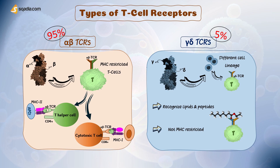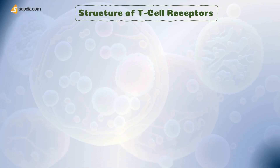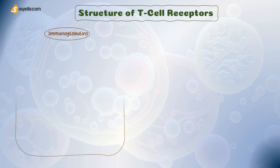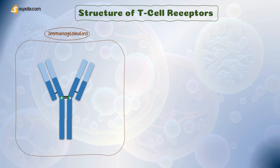But when we talk about TCRs, we generally talk about the majority, which are alpha-beta TCRs, so we say TCRs are MHC-restricted. That was all about the types. Now let's have a brief look at the structure of TCRs. There are many similarities between the structure of TCRs and that of immunoglobulins, so let's recall the structure of immunoglobulin from our previous videos first.